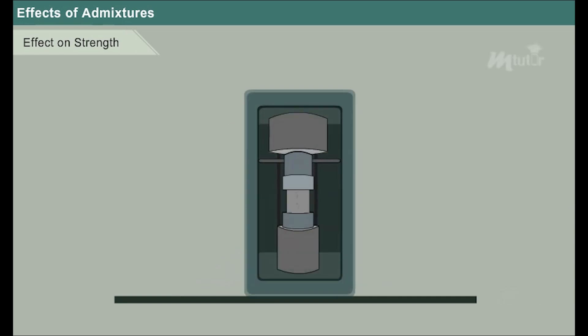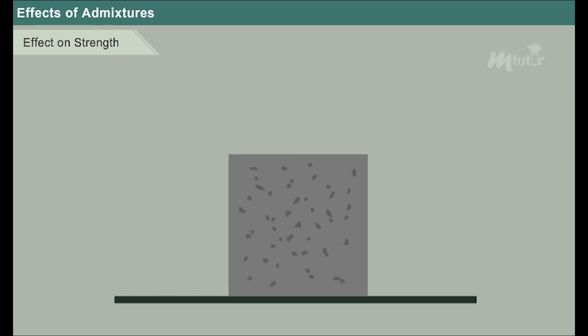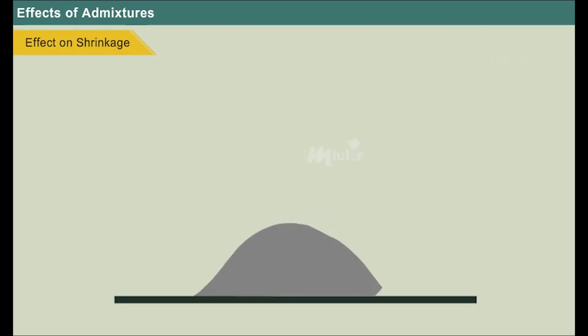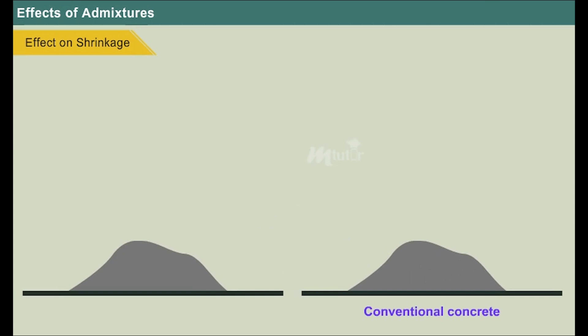This reduction in strength is due to the voids created by the admixture. Effect on shrinkage: When ground granulated blast furnace slag and hydraulic slag are added to the concrete, they act as expansive agents and reduce shrinkage in the hardened concrete.